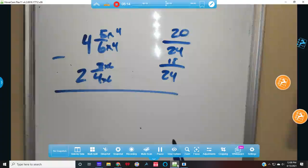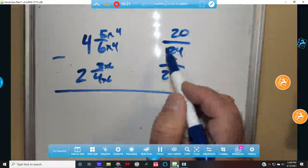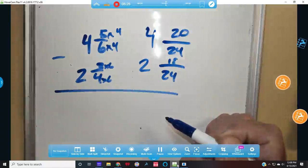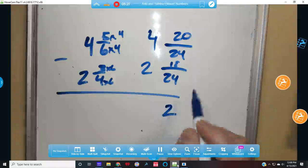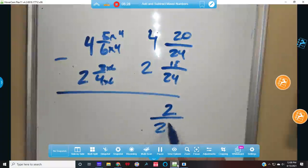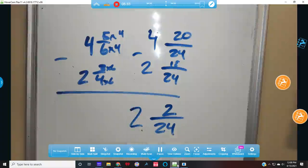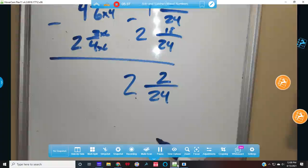So I am going to do some subtracting here. I have to put my 4 here and my 2 here. 20 take away 18, that to me sounds like 2. My denominator stays the same. 4 minus 2 equals 2. So I get 2 and 2 twenty-fourths. I'm done, right?